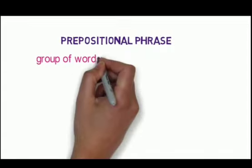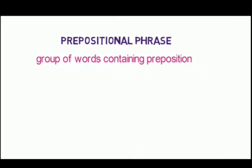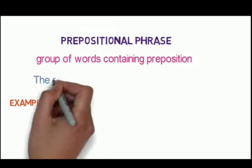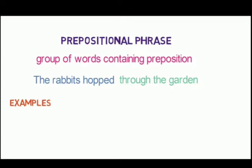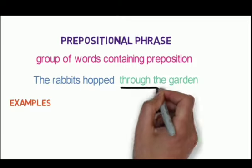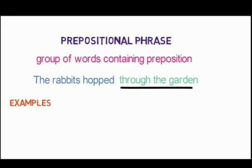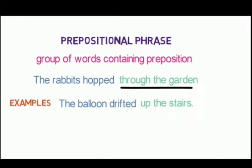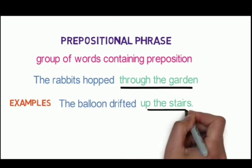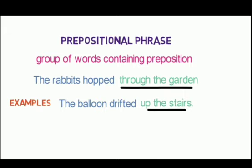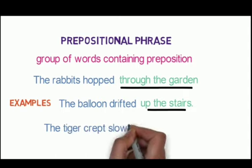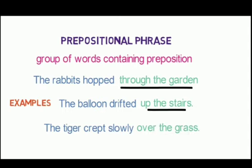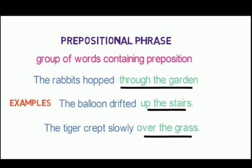Now, the prepositional phrase. A group of words containing a preposition is called a prepositional phrase. Example: 'The rabbits hopped through the garden' — 'through the garden' is the prepositional phrase. 'The balloon drifted up the stairs' — 'up the stairs' is a prepositional phrase. 'The tiger crept slowly over the grass' — 'over the grass' puts emphasis on the whole sentence, changing its meaning.